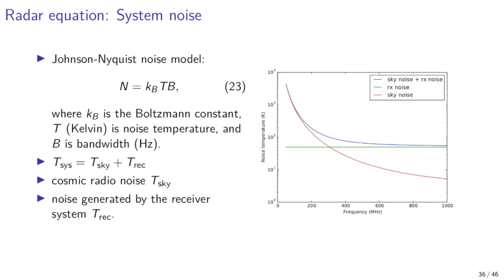We are now almost done deriving an expression for signal-to-noise ratio of an incoherent scatter radar. The only remaining part needed is system noise power. In addition to radar echoes, a radar system receives noise of cosmic origin and noise generated by the radio receiver itself. Within a narrow frequency band, this noise can be modeled as white noise with total power given by the Nyquist-Johnson noise model — the low-frequency approximation for the Rayleigh-Jeans model — where noise power is the product of the Boltzmann constant k_B, noise temperature T, and total noise bandwidth B.